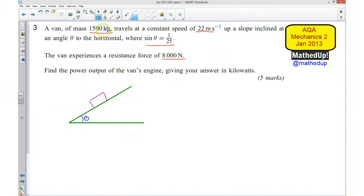It has a mass of 1500 kilograms, so there's a force acting downward from this van. That's 1500 times gravity.